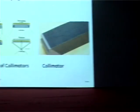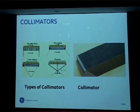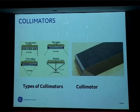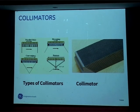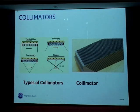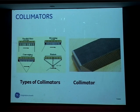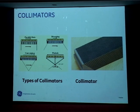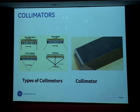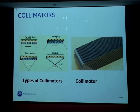On the right-hand side is a diagram of a collimator. You can see the hexagonal holes through which gamma rays pass and are detected by the detector. There are different types of collimators: parallel-hole, diverging, converging. The most commonly used collimator is the parallel-hole collimator.